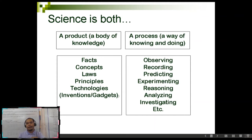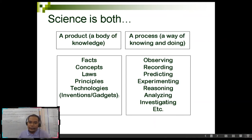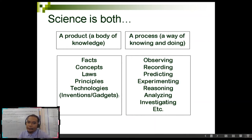So aside from the usual definition of science that you can find in the dictionary, science again can be both a product and a process.